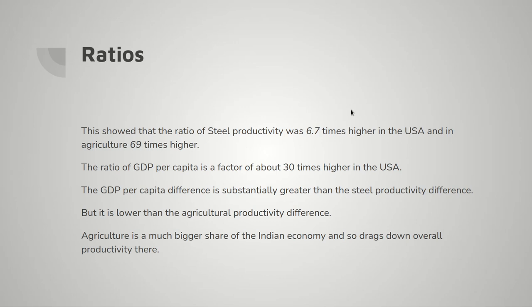The ratio of GDP per capita between the USA and India is midway between these logarithmically — 30 times higher GDP in the US. It's true that the GDP per capita is substantially greater than the difference in productivity in the steel industry, which is one of the criticisms I faced. But it's much lower than the difference in agricultural productivity. And agriculture is a much bigger share of the Indian economy than it is of the US economy, so it tends to drag down the overall productivity in India.